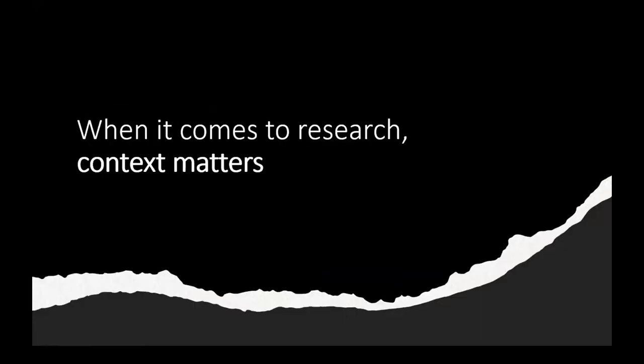The main idea of the book is that when it comes to research, context matters. Context affects everything about the research process, including what level of authority is considered acceptable in a source, what types of sources we use, where we look for those sources, and how we practice the ethical use of information.